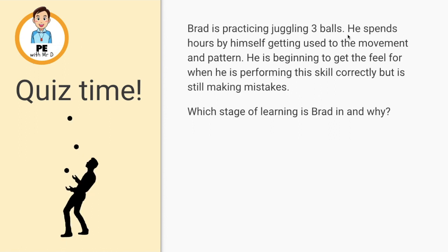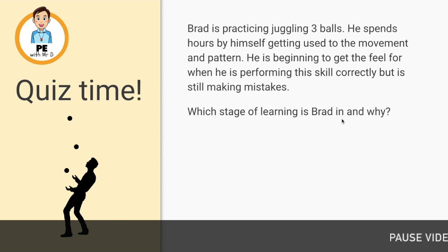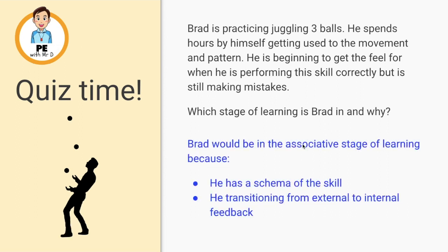Next we have Brad. Brad is practicing juggling three balls. He spends hours by himself getting used to the movement and pattern, and he's beginning to get a feel for when he's performing the skill correctly, though he's still making some mistakes. Which stage of learning is Brad in and why? Brad would be in the associative stage of learning — the middle one — because he has a schema of the skill and knows how to do it in his mind, and he is transitioning from external to internal feedback, as he's starting to get a feel for when he's performing the skill correctly.